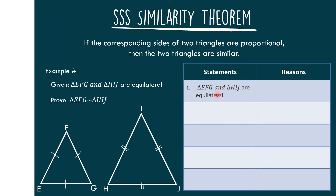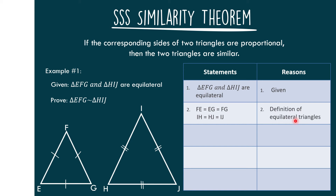First statement is the given: triangle EFG and triangle HIJ are equilateral triangles. Statement number 2: since they are equilateral, we can see that side EF equals side EG equals side FG, as well as side HI equals side HJ equals side IJ, by the definition of equilateral triangles.